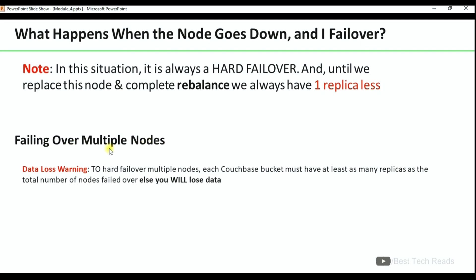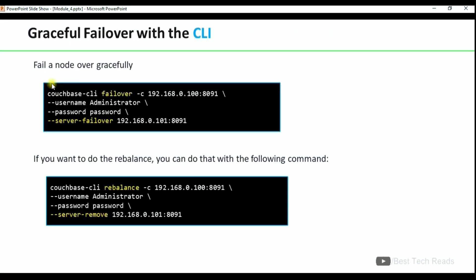To hard failover multiple nodes, each Couchbase bucket must have at least as many replicas as total number of nodes failed over, else you will lose data. This is one more important point. These are the commands to gracefully failover and rebalance a node with CLI.